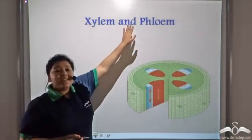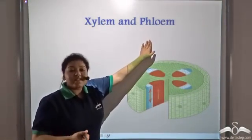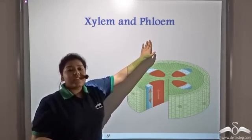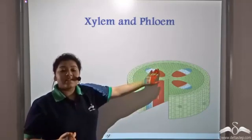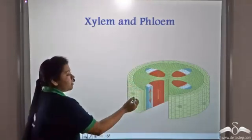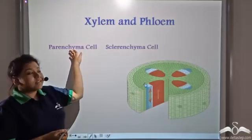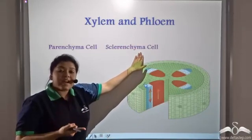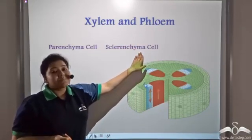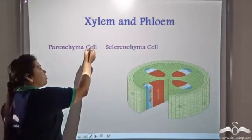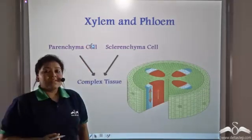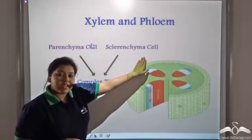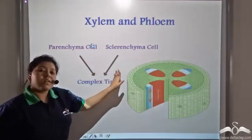Now the xylem and the phloem, which form the conducting tissue system of the plant, do not contain one kind of cell — they contain more than one kind. They are made up of parenchyma cells and sclerenchyma cells. Since there is more than one kind of cell, they no longer remain a simple tissue; they form a complex tissue.